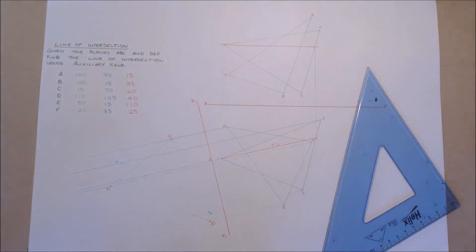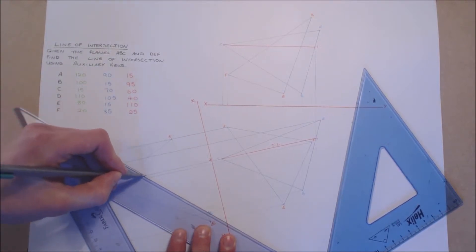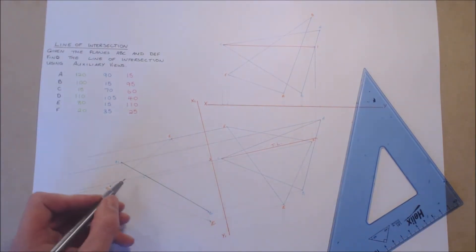When all points on the plane A, B, C and D, E, F are brought down, we can see that the plane A, B, C will appear as a line or an edge view in the auxiliary view.